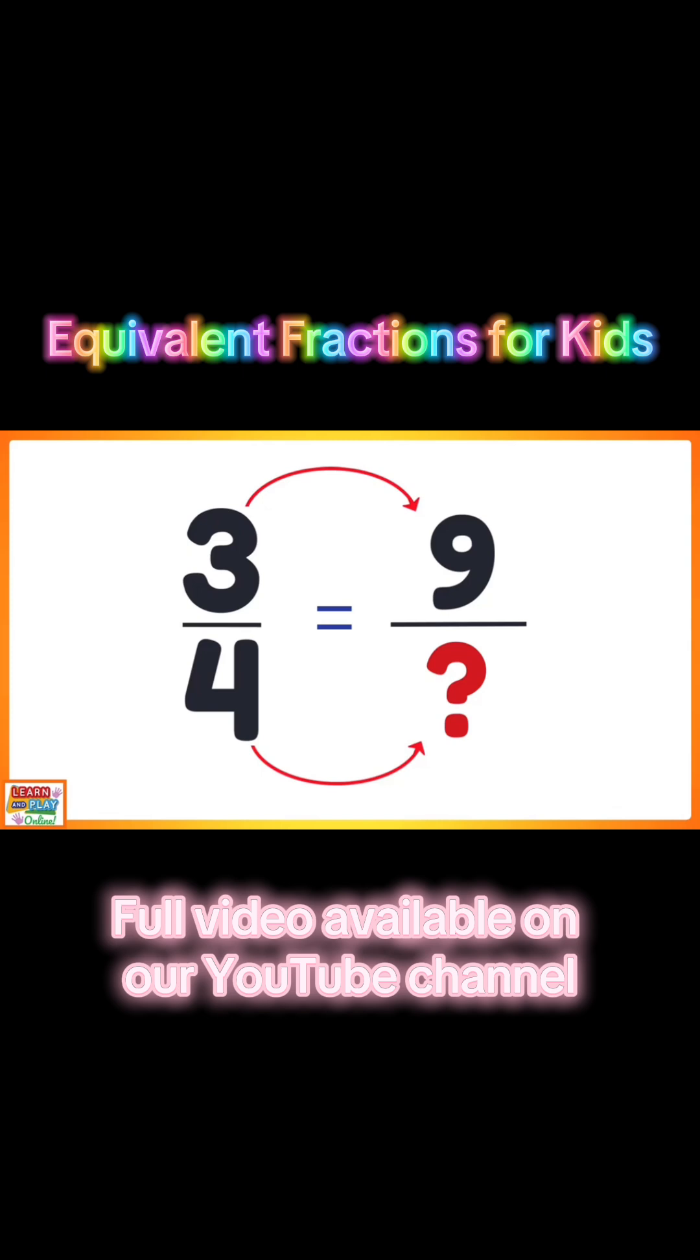To get from 3 to 9, you had to multiply the numerator by 3. So 3 times 3 is 9. Since you have to do the same to the denominator, 4 times 3 equals 12. So 3 quarters is equivalent to 9 twelfths.